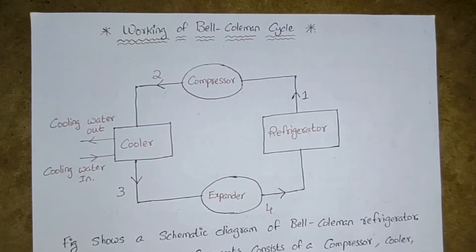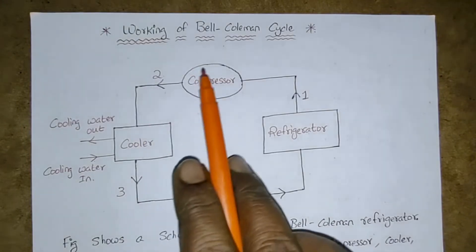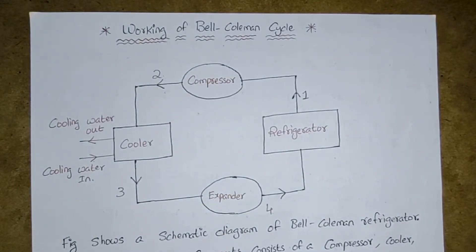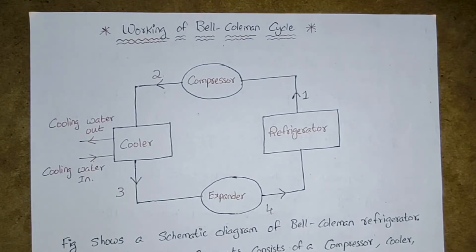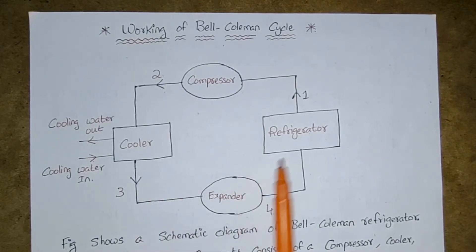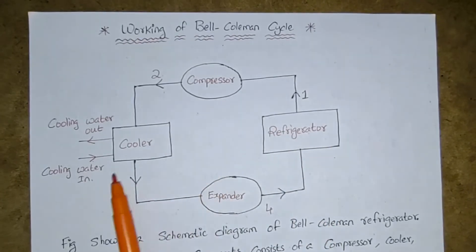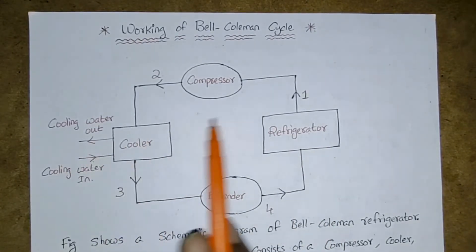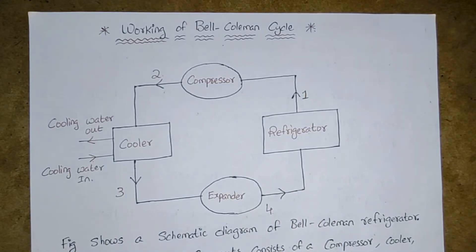Material is ready in front of you. We will start discussing. Here this is the working of Bell-Coleman cycle. If you are getting a question in your thermodynamic subject — state and explain the working of a Bell-Coleman cycle or derive Bell-Coleman cycle — so with this line diagram and with this process diagram, you have to explain it properly. Here we are having the diagram of this working of Bell-Coleman cycle. You can see this is the refrigerator, compressor, cooler, expander.